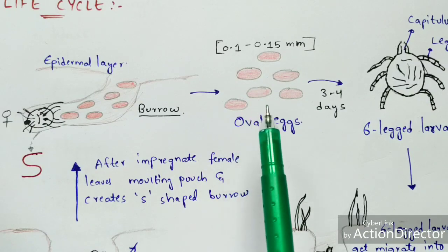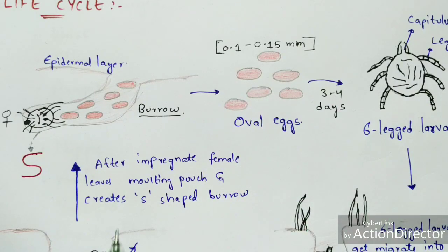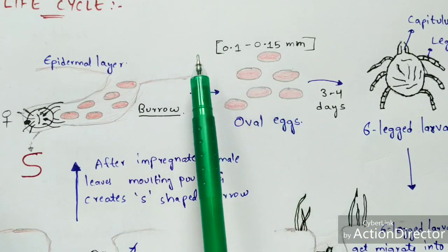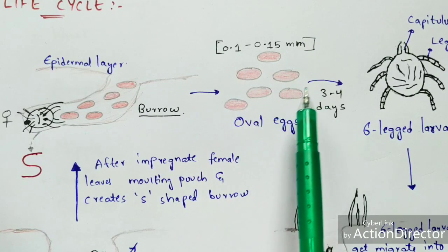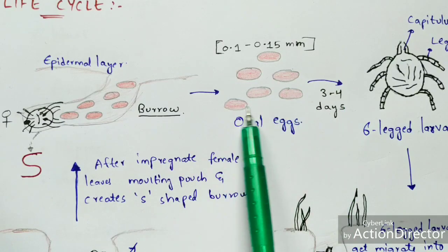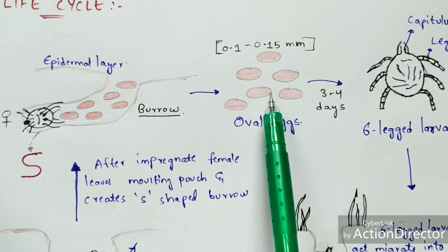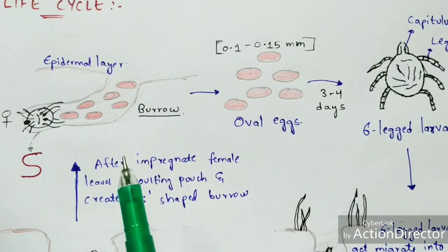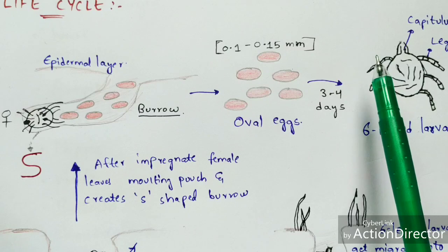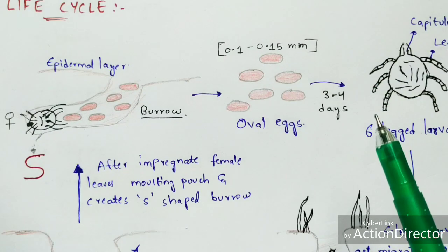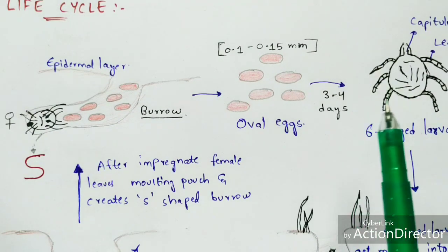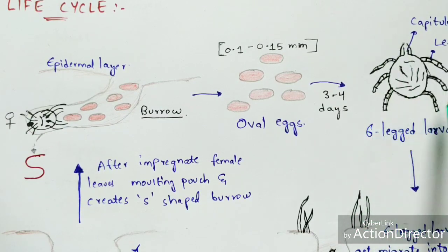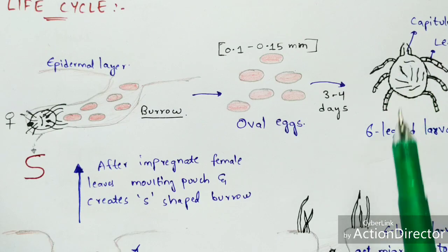The eggs are laid within the burrow. Within three to four days, the oval eggs get ruptured, and immediately a six-legged larva protrudes out from the egg. You can count the six legs on this larva. Because it is in an immature form, we call it the six-legged larva.